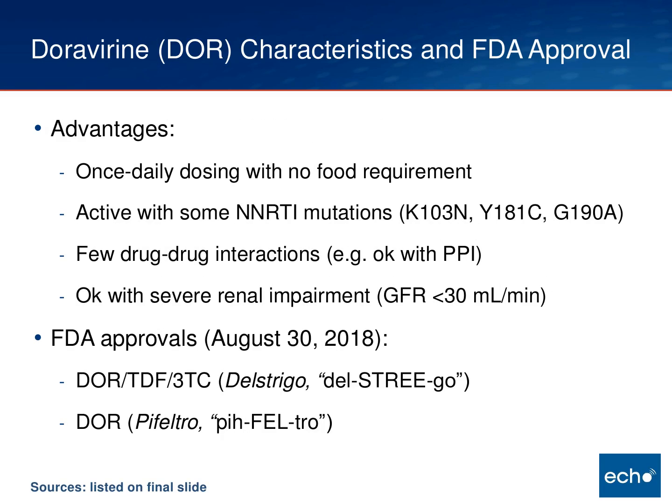In general characteristics of this new NNRTI called Doravirine — also note the abbreviation DOR, which can get confusing with Darunavir, DRV. Some of the advantages: it is a once-daily NNRTI with no food requirements, so that's an advantage over Rilpivirine. It retains activity in the setting of some common NNRTI resistance mutations — a study showed it retains activity with K103N, Y181C, G190A, or a combination of 103N and 181C. Like Etravirine, it retains activity with some common NNRTI mutations, but unlike Etravirine, it's once a day. It also probably has fewer drug-drug interactions.